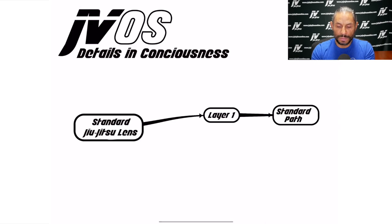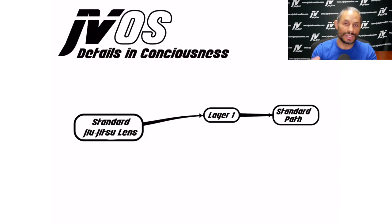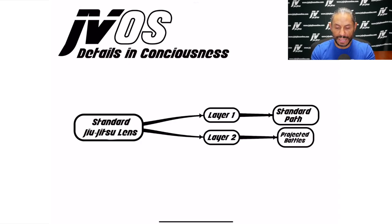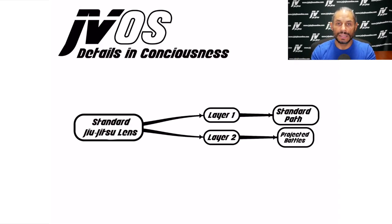Layer one is a standard path. They give you the step-by-step instructions — you go here, you push down this leg, you step over. Just the basic step-by-step, giving you a visual plan of where we're going. The second layer is what I call projected battles — they might do this, they might do that — giving you perceived problems that could occur along this path.